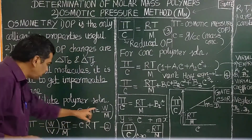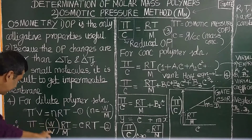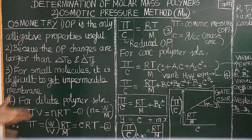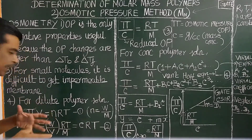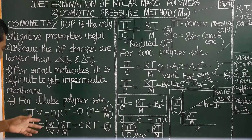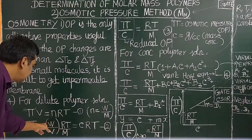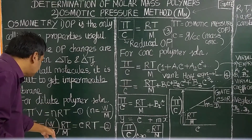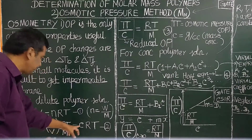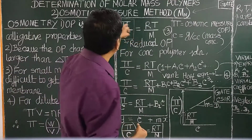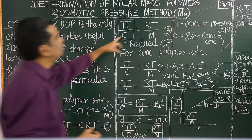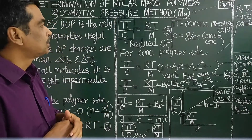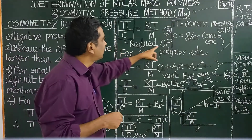On substituting n = W/M into the equation and noting that W by V is the mass concentration of the polymer, we get phi equals C·RT/M, or rearranging: phi by C equals RT by M. Here W by V, called mass concentration of the polymer, equals C. Therefore phi by C equals RT by M. This quantity phi by C is called the reduced osmotic pressure, and it is related to the molar mass of the macromolecule.